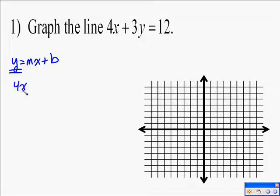To use this form, you have to have your problem solved for y. Well, we're not solved for y. We have 4x plus 3y on the same side. So we need to get 3y by itself.